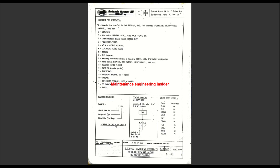Anywhere you see the coil of a relay or a contactor, it tells you where you can find the contacts related to that relay. It's telling you this coil is associated with two normally open contacts and one normally closed contact. One can be found on sheet three, line six, and the normally closed contact can be found on sheet one, line seven.